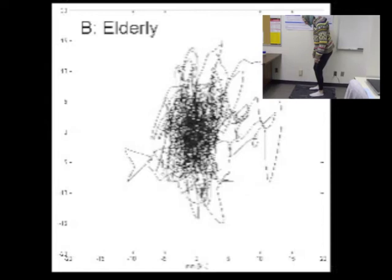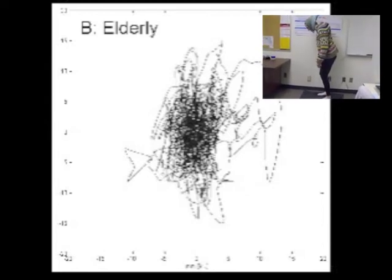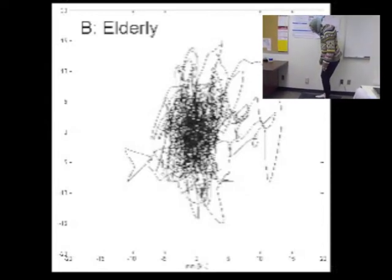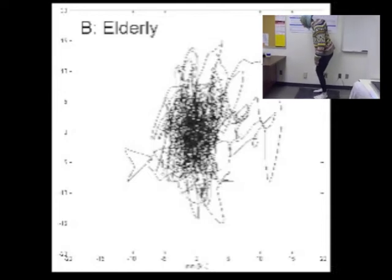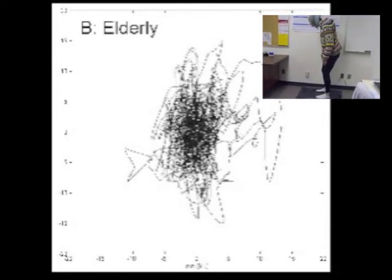Elderly adults demonstrate a greater centre of pressure sway, as was also predicted. There is an increased sway in both the anterior, posterior and mediolateral directions, as the trace travels vastly around the graph.